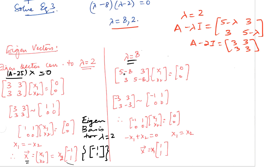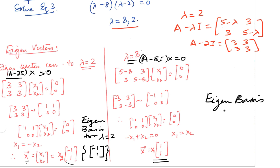Now for lambda equals 8, we do the same process: A minus 8I times x equals 0. Plugging in, we get [-3,3; 3,-3]. Applying the row reduction algorithm, we find that the eigenvector is all possible linear combinations of the vector [1; 1]. The eigenbasis corresponding to eigenvalue 8 is the vector [1; 1].